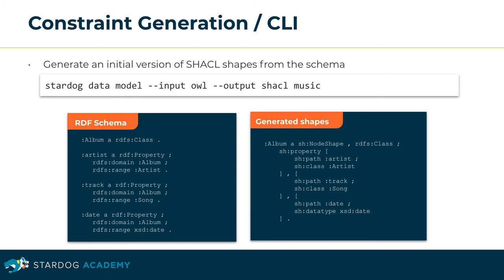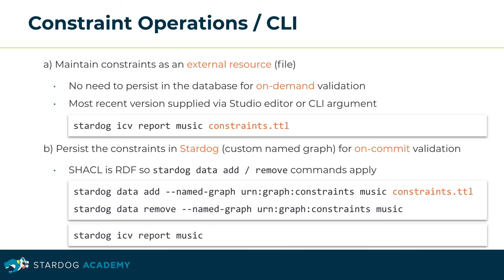To kick off constraint creation, you may generate an initial version of the SHACL shapes from a schema. SHACL shapes are an alternative way of expressing a data model. The CLI command 'stardoc data model' translates between various model manifestations. Selecting 'all' as the input and 'shacl' as the output variant, it will convert, for example, the property domain and range definitions into corresponding SHACL shapes. The command 'stardoc icv report' will apply a shapes graph on your database and create a SHACL validation report. The shapes graph is either retrieved from a file or stored within the database.